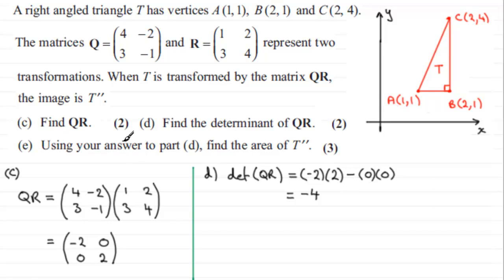And in part E, it says using your answer to part D, find the area of the new triangle T double prime. Well, this is easy because you should remember that when we want to find the area of the new shape, the area of T double prime, it's always equal to the modulus of the determinant of your transformation matrix, so the modulus of the determinant QR, multiplied by the area of the original triangle. This is a common result in transformations of matrices. So it's the area of T. This is the scale factor.